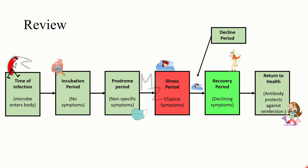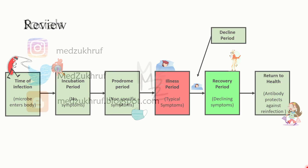Let's review everything quickly. For the stages of infection: first, the organism enters the body. Then the incubation period begins — the time between exposure to the microbe or toxin and the appearance of the first symptom. Second is the prodromal period, when non-specific symptoms occur. Third is the specific illness or disease period, when the characteristic features of the disease occur. Next is the decline period, where symptoms and number of pathogens decrease. Finally, the recovery period is when symptoms resolve and health is restored. After recovery, antibodies protect against reinfection.